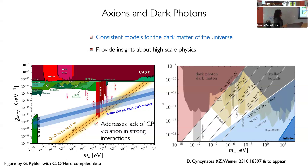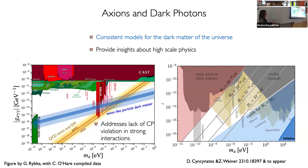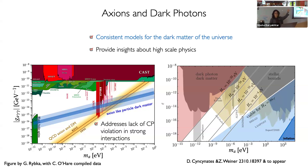We have consistent models for dark matter of the universe in the blue regions. They might provide insights about high scale physics — these are very small numbers, or alternatively very high scales. Just as with neutrinos that point us to higher scales than their masses, if we discover this particle, that might give us a hint about some UV or heavy physics, much beyond what we can reach with direct experiments. It's not just finding one new particle — it can tell us about very high scales.